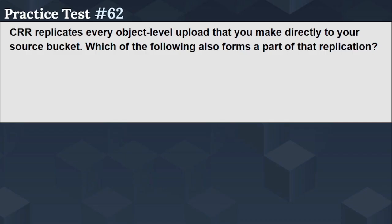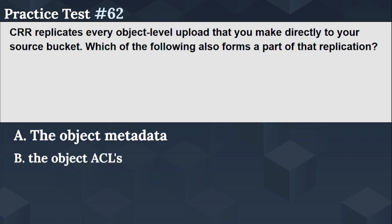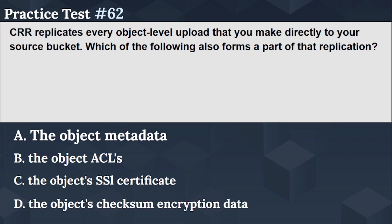The next question is: CRR replicates every object-level upload that you make directly to your source bucket. Which of the following also forms a part of that replication? Option A: the object metadata. Option B: the object ACLs. Option C: the object's SSL certificate. Option D: the object's checksum encryption data. Please select your answer in the next 5 seconds.